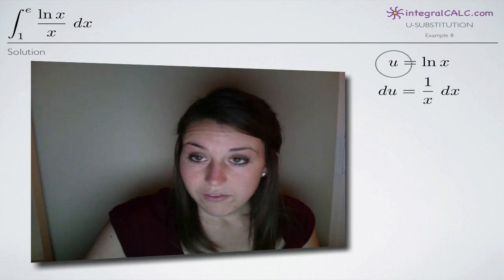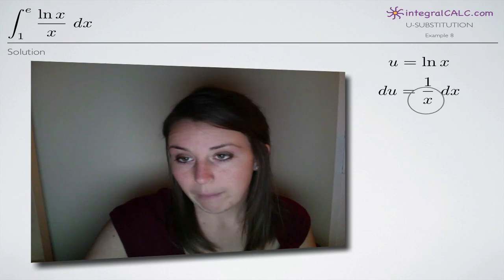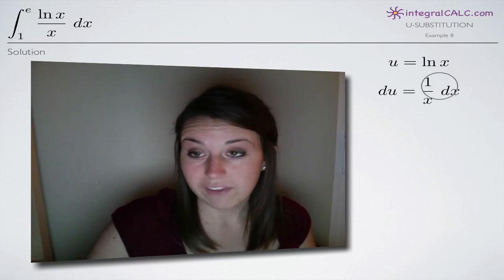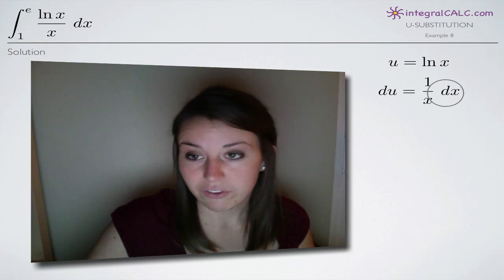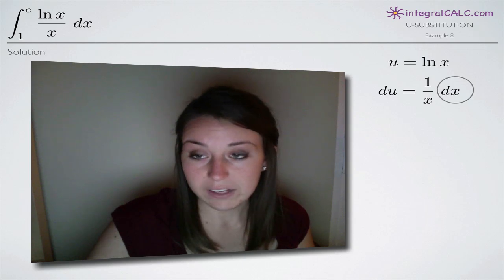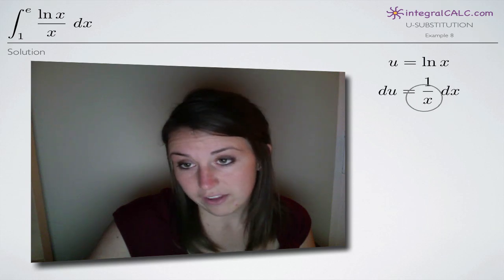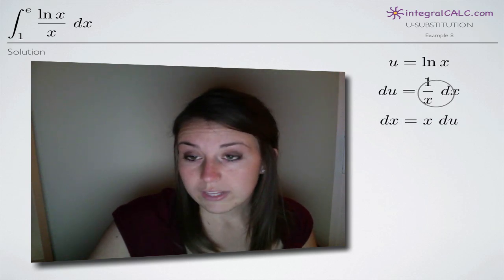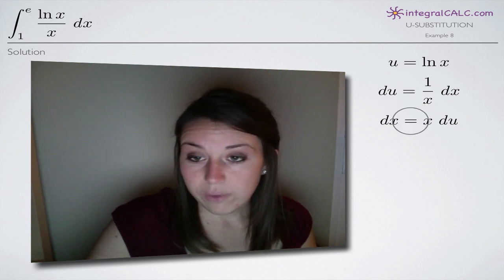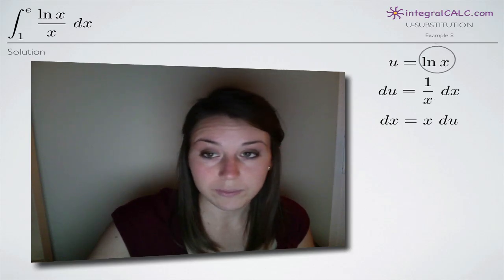We'll then take the derivative of u and we get du. The derivative of natural log of x or ln of x is 1 divided by x and then remember we always add this dx here because we take the derivative. We also need to solve for dx. In order to do that, we have to multiply both sides by x to cancel this x here in the denominator. When we do that, we'll get dx equals x times du and now that we have something for dx here and something for ln of x, we can go ahead and make these two substitutions.